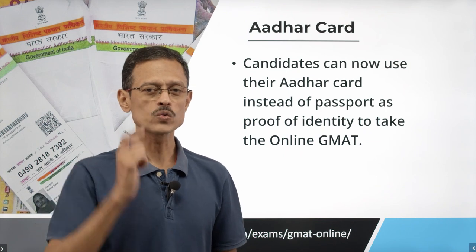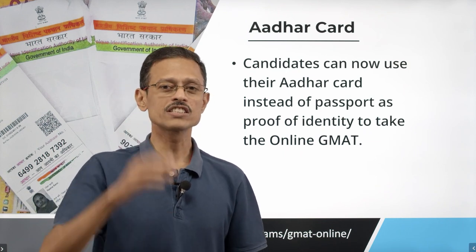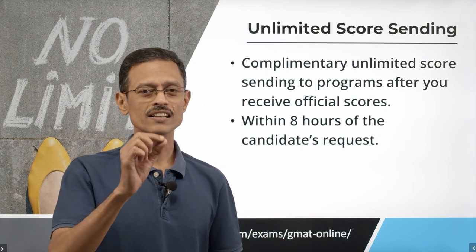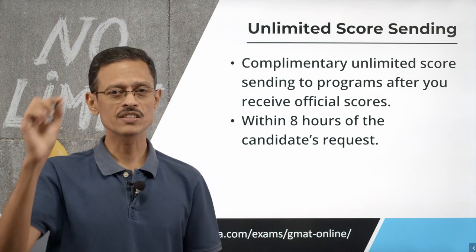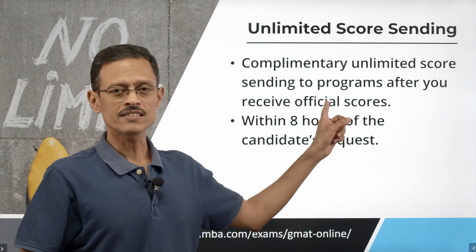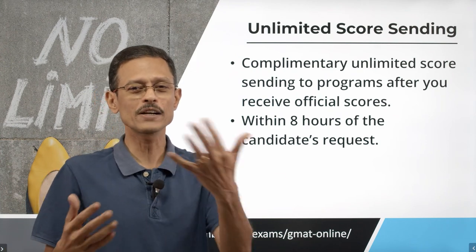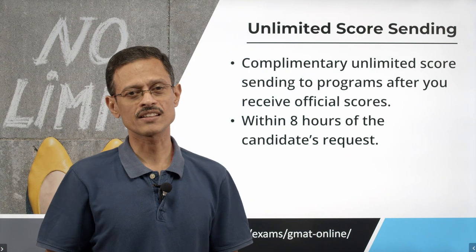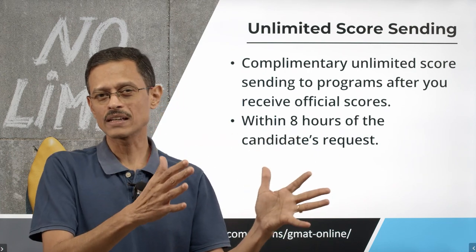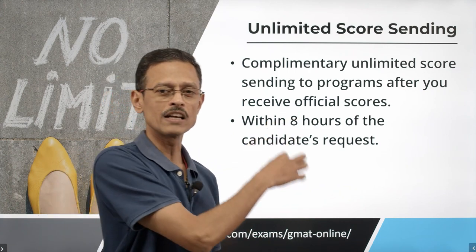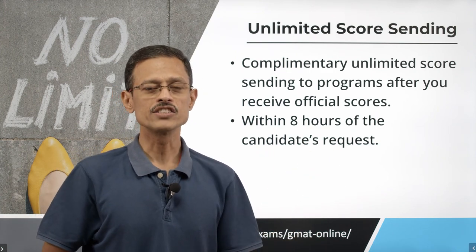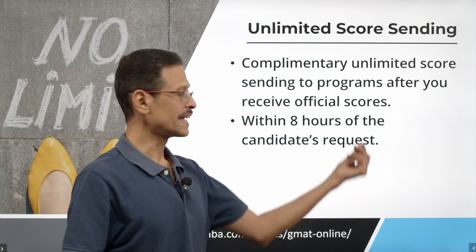A very sweet deal that GMAT made available for the online version — and has not removed — is unlimited score sending. In the test center based version, you can send scores to 5 schools free of cost, and each additional score report costs US$35. In the online version, you can send your scores to an unlimited number of schools — apply to 40 schools, send scores to all 40, GMAT won't charge you an extra cent. This benefit is maintained even after April 8th. From the day you receive your official score, you can request GMAT to send scores to schools and it will be delivered within 8 hours.